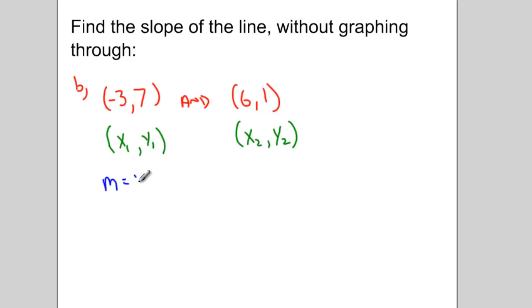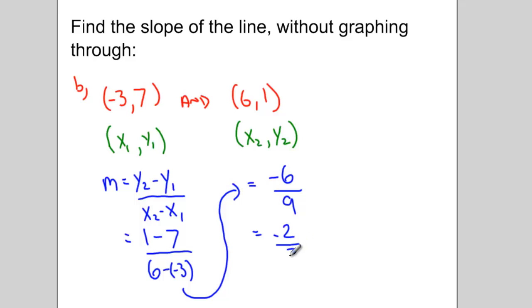Plugging this into the equation, y2 minus y1 over x2 minus x1, I end up with 1 take away 7 over 6 take away negative 3. Solving this now, I get negative 6 over 6 take away negative 3, which would be positive negative 9. And then my slope would simplify to or reduce to negative 2 thirds.